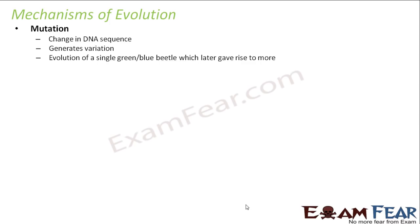The first mechanism is mutation. Mutation is nothing but a change in DNA sequence. Inside the cell we have the nucleus, inside the nucleus we have chromosomes, inside the chromosomes we have genes, and genes are nothing but DNA. DNA consists of a sequence of nucleotides. If there is a change in the nucleotide sequence, that means there is some error in the DNA copy, which gives rise to variation — offspring have some new traits not present in the parents. For example, the evolution of the first single green or blue beetle was a result of mutation.